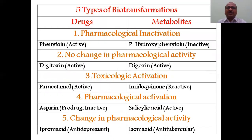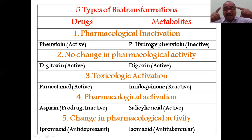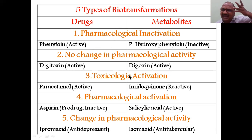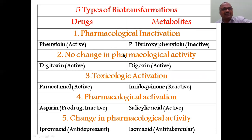There are five types of biotransformation. The first type is pharmacological inactivation — the drug molecule becomes pharmacologically inactive due to biotransformation. For example, phenytoin is a very active drug. It is converted by biotransformation into p-hydroxyphenytoin, which is inactive in nature. So an active drug is converted into an inactive drug. One example is enough for regular exams.